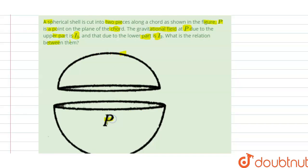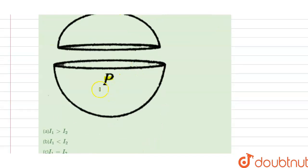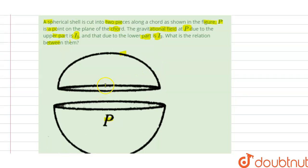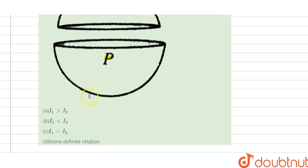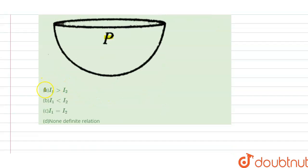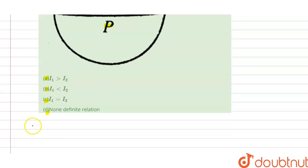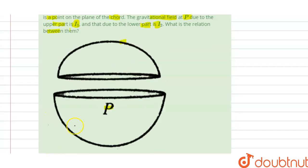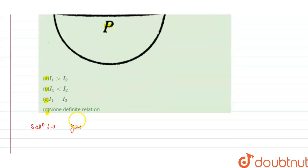So we have a spherical shell and we cut it into two pieces. P is a point here, and we have to find the relation between the gravitational field acting due to the upper and lower parts. Options A, B, C, and D are given, and we have to find which option is correct.